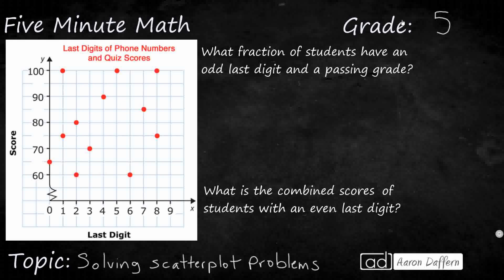So take a look at our scatterplot here. We have the last digit of student phone numbers, and we see the score they got on a quiz. And this little squiggle right here says that we're skipping some numbers. Rather than going from 0 up to 60, we just skipped a whole bunch of numbers. We're starting at 60.